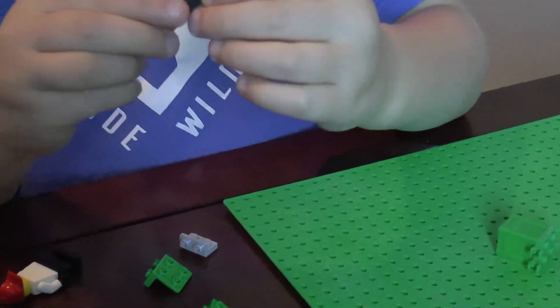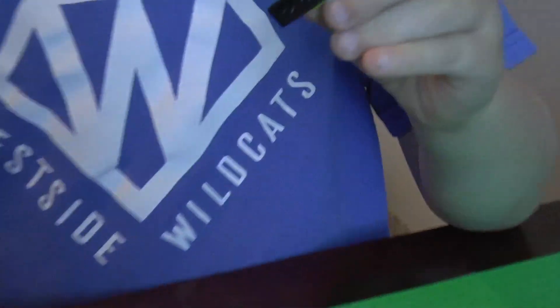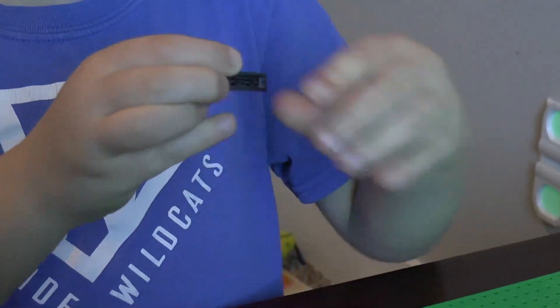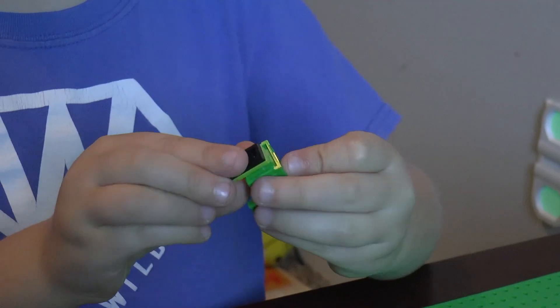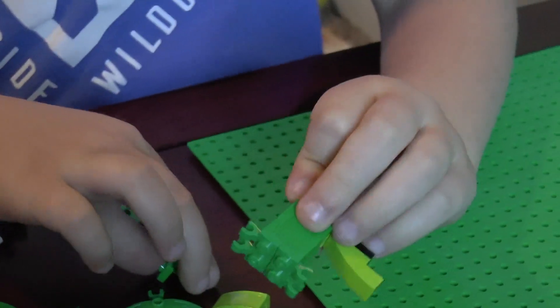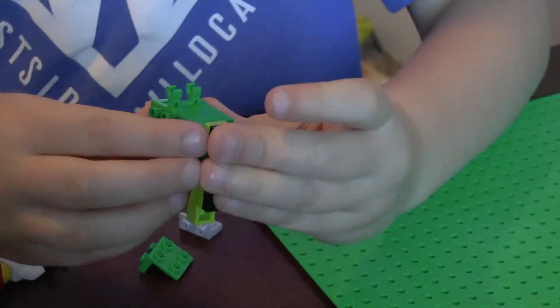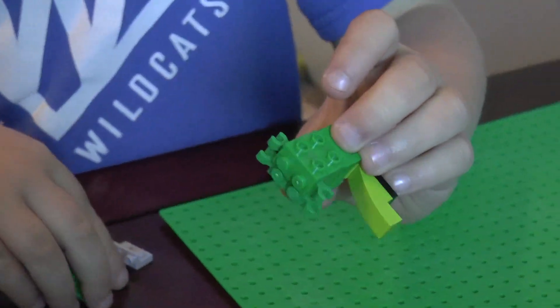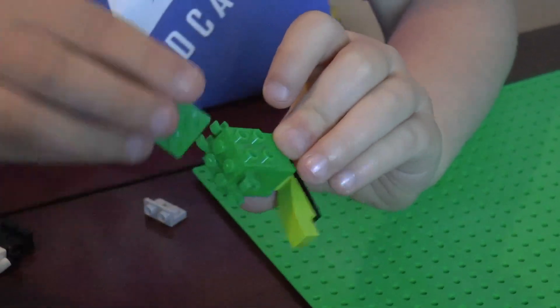And then we're going to set this down here. And then we're going to build the tail. And then attach it to this, to the back over here. And then we're going to need this piece.